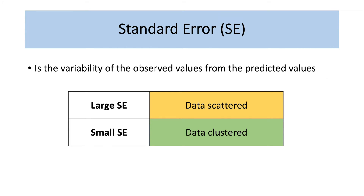The next aspect to look into is the standard error (SE) — the variability of the observed value from the predicted value. When we predict, there is a difference between the actual and the predicted value. If that difference is large, the standard error will also be large, indicating your actual value is very far from your predicted value and your data is scattered further from your trend line. If the standard error is small, all data points are much more clustered or nearer to your trend line.